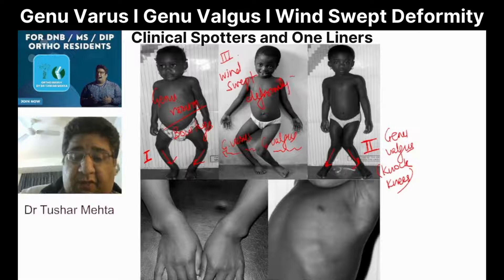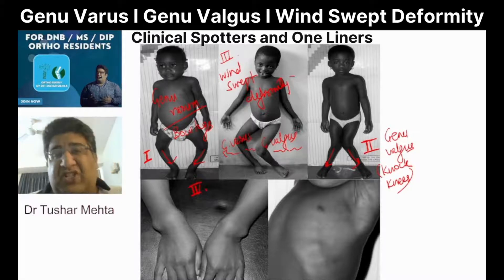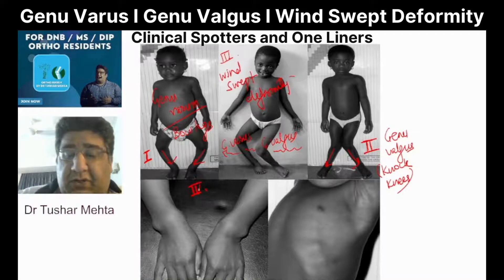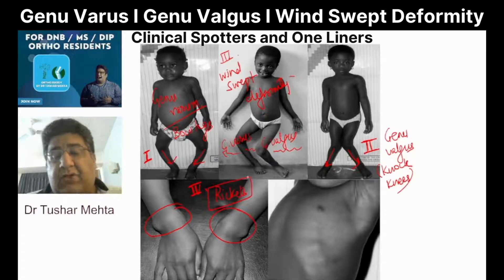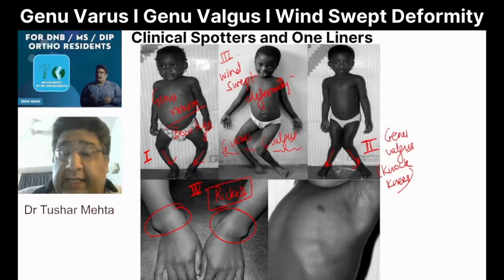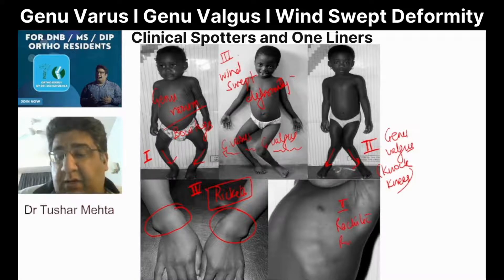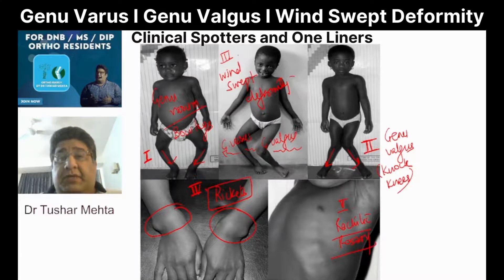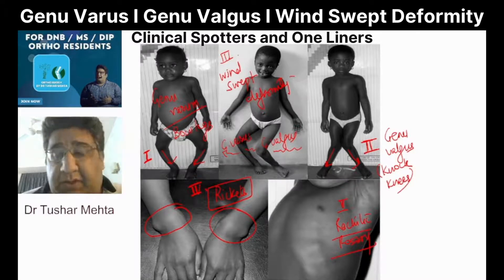The fourth image is basically showing you the changes in the distal end of the wrist — the changes in the distal end of the radius due to rickets: metaphyseal cupping, splaying, fraying, broadening, widening. And the fifth image is what is called rachitic rosary. So we have covered five clinical spotters here.